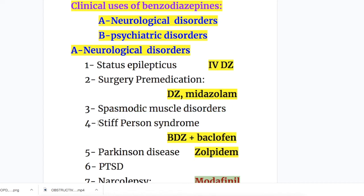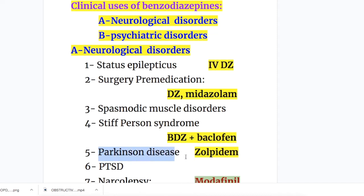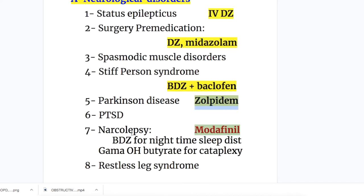Number four, they are used in stiff person syndrome — benzodiazepine plus baclofen. Number five, Parkinson's disease — the drug of choice is zolpidem. Number six, post-traumatic stress disorder. Number seven, narcolepsy — the drug for narcolepsy treatment is modafinil, which is not a benzodiazepine. Benzodiazepines in narcolepsy are used for nighttime sleep disturbances, and gamma hydroxybutyrate is used for cataplexy. Number eight, restless leg syndrome.